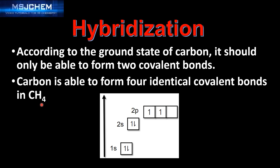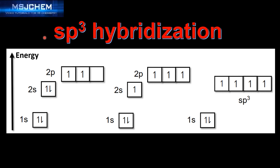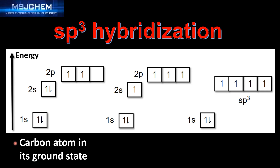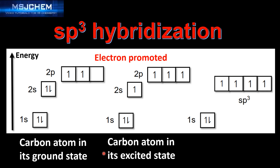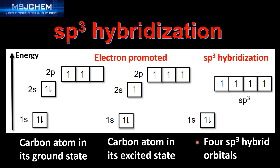We'll look at the explanation of how carbon is able to form four identical bonds in methane by examining SP3 hybridization. We start with the carbon atom in its ground state: two electrons in the 1S sublevel, two in the 2S sublevel, and two in the 2P sublevel. An electron is then promoted from the 2S sublevel to the 2P sublevel, giving the carbon atom in its excited state one electron in the 2S sublevel and three in the 2P sublevel. Next, the 2S and 2P orbitals mix to form four SP3 hybrid orbitals, each containing one electron.